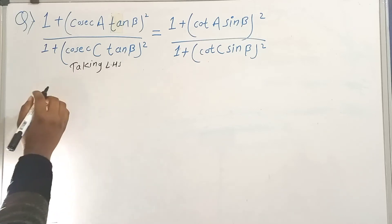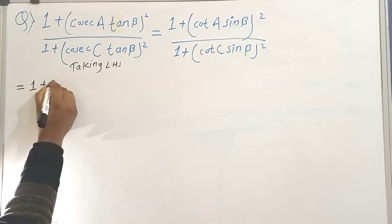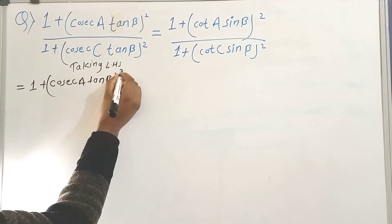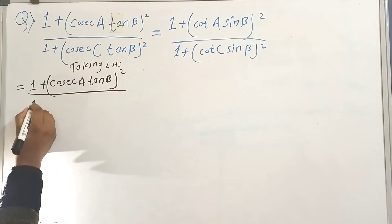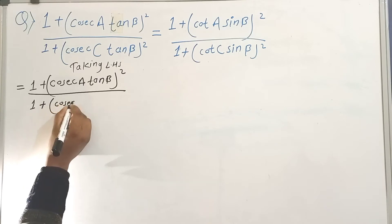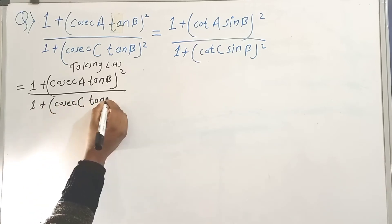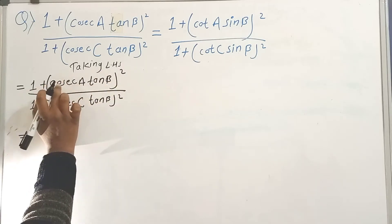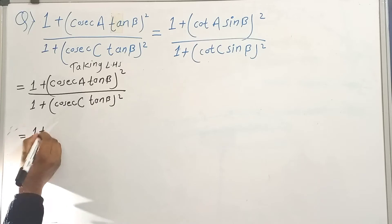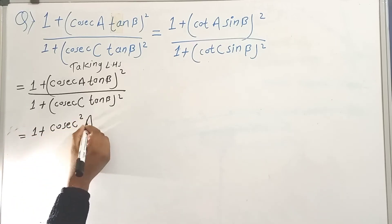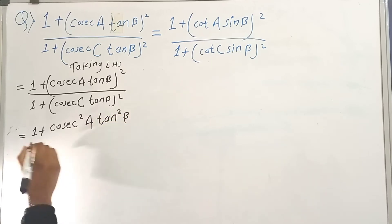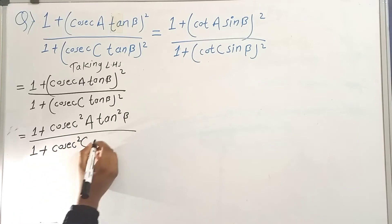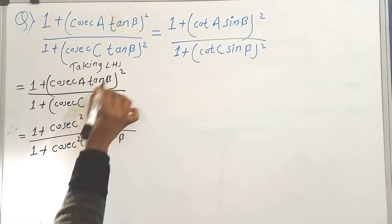This is the first step. 1 plus cosec a, tan b squared, 1 plus cosec c, tan b squared. 1 plus cosec c, tan b — this square, written out separately.